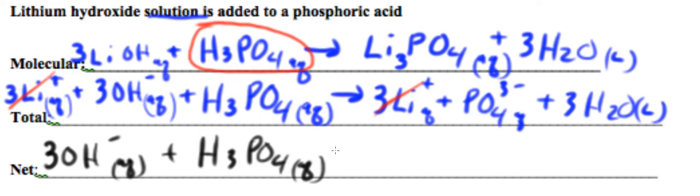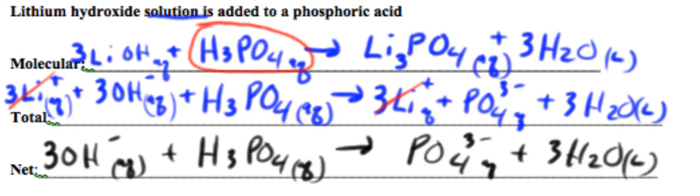Produces phosphate plus three water molecules, and that's our net ionic equation.